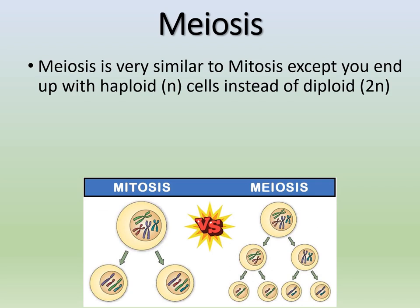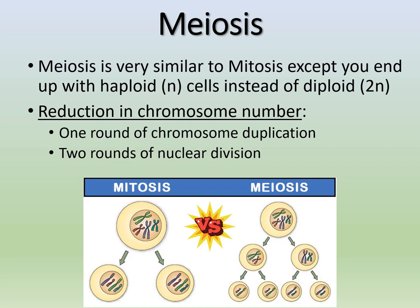Meiosis is very similar to mitosis — the first few steps are nearly identical. But instead of ending up with two diploid cells, you end up with four haploid cells. We first duplicate our chromosomes just like in mitosis, then instead of one round of nuclear division, we have two rounds. We add an extra step in meiosis, and it's a very important one. During this whole process we get the genetic variation we discussed.